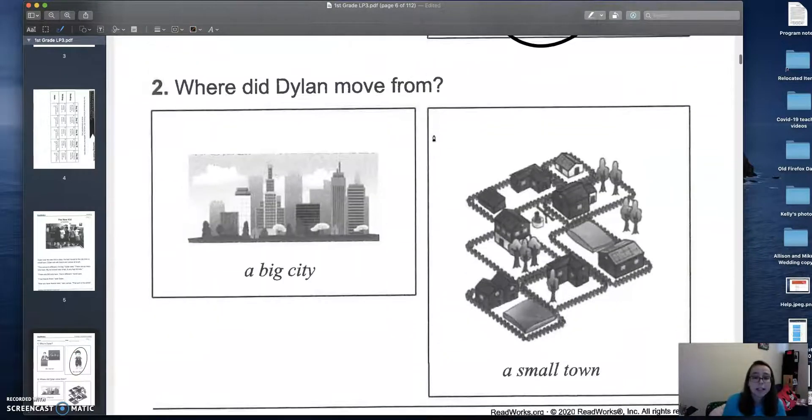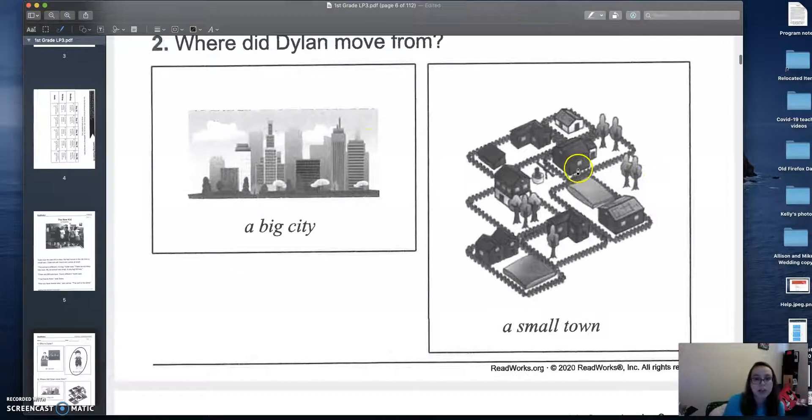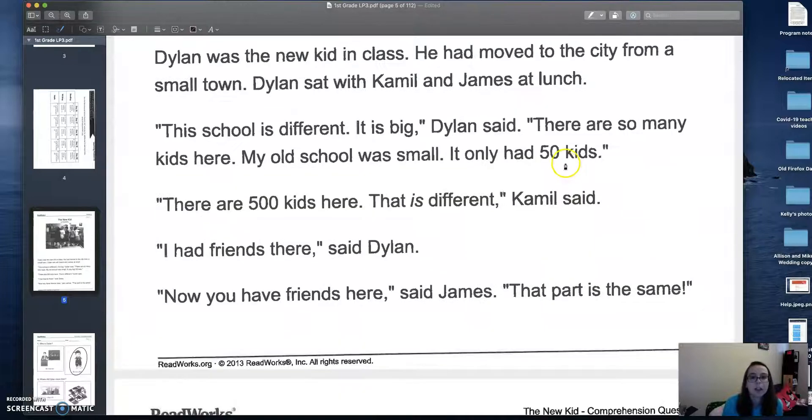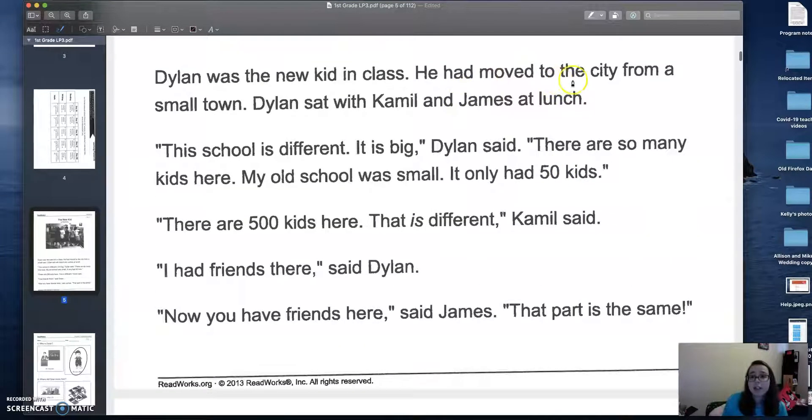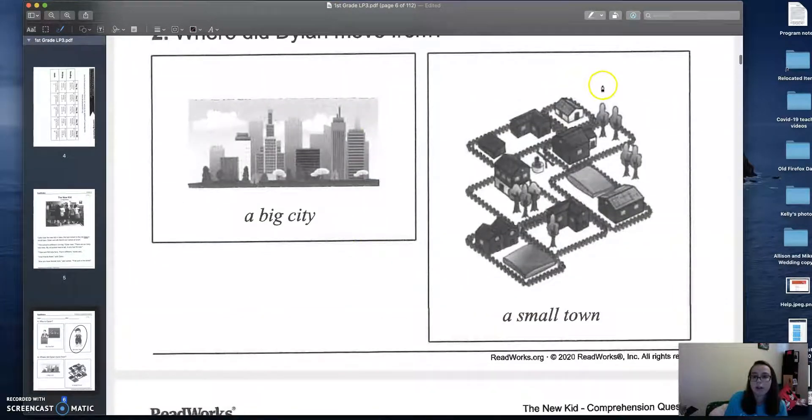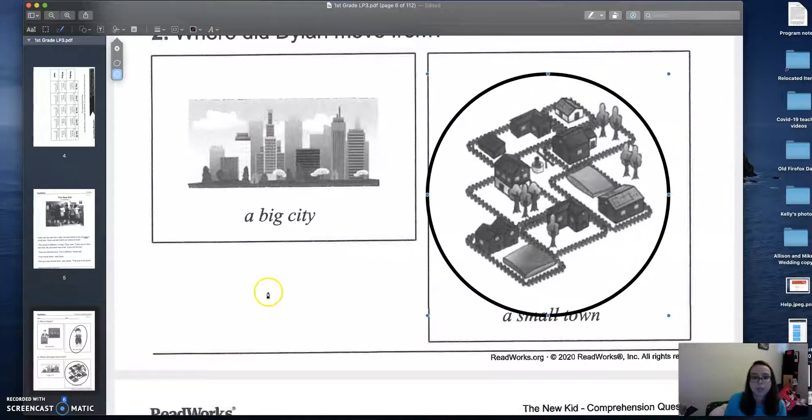Where did Dylan move from? A big city or a small town? Let's see. Let's go back to our story. He had moved to the city from a small town. So from tells us where he was coming from. So where was he coming from? A small town. Good. So we are going to circle a small town. Good.